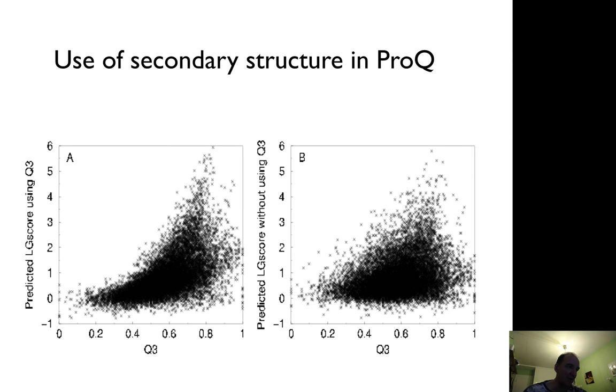So one example here is what happens if you add secondary structure. Look at the right first, where we just have the predicted quality. You see that the quality is not very good. A good quality prediction should be a straight line. So if you have Q3, which measures how well the model agrees with predicted secondary structure, it should be about 70% correct. Any model that has much less than 70% correct should be a bad model.